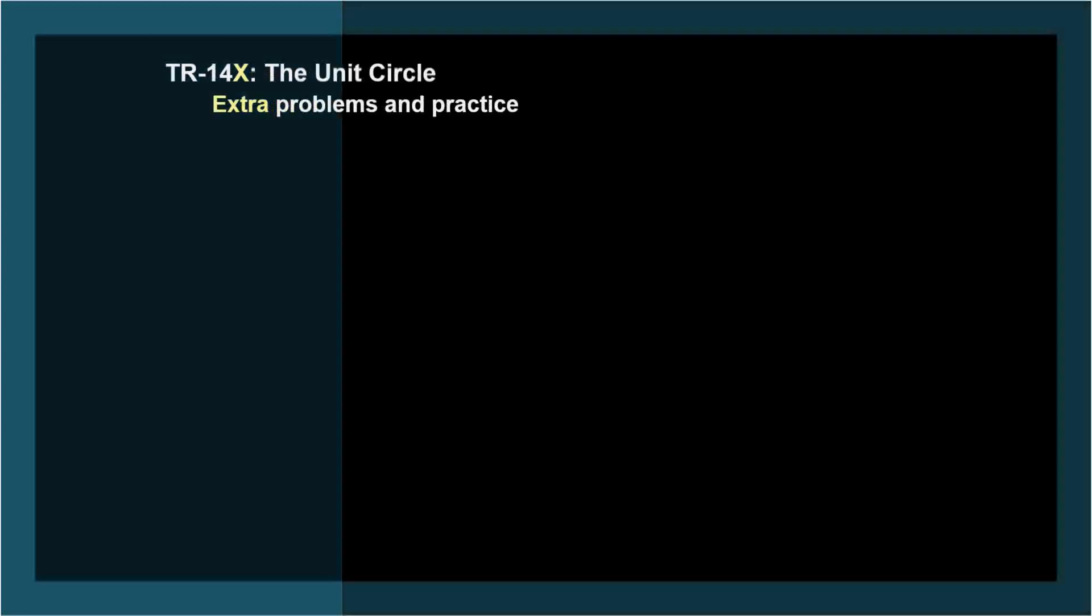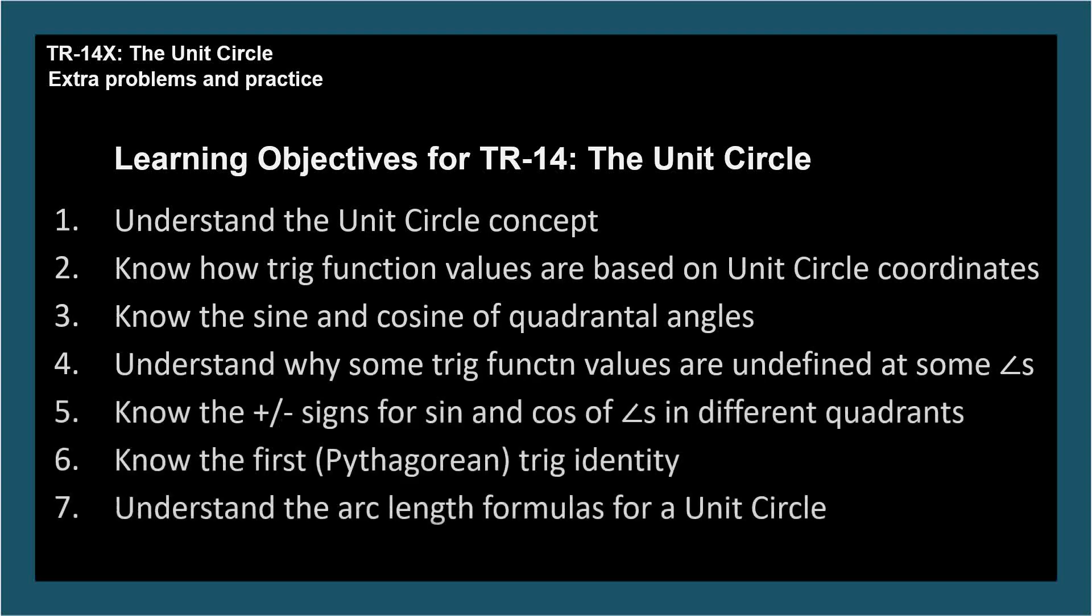The learning objectives for TR-14 are: understand the unit circle concept, know how trig function values are based on unit circle coordinates, determine the sine and cosine of quadrantal angles, understand why some trig functions are undefined for some angles, know the positive negative signs for sine and cosine for angles in different quadrants, know the first Pythagorean trig identity, and understand the arc length formulas for a unit circle.